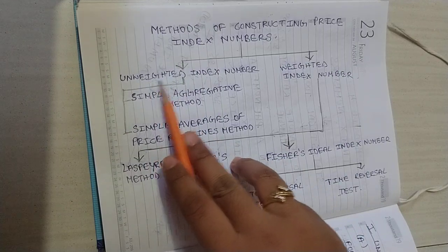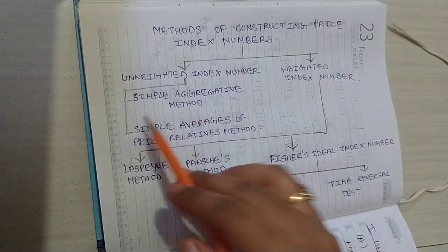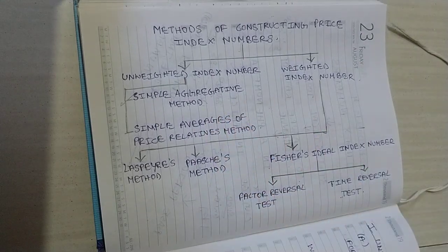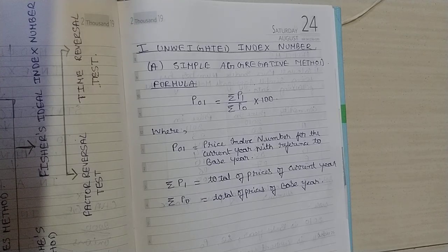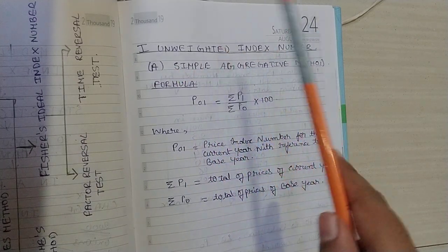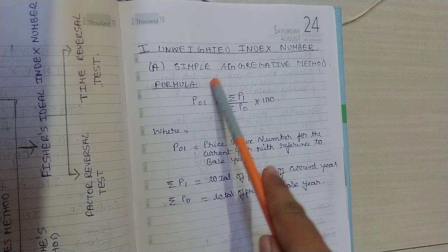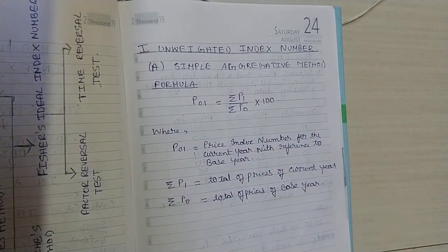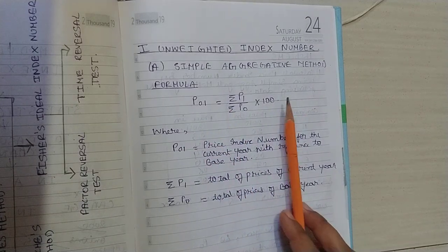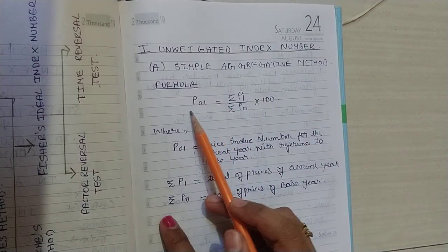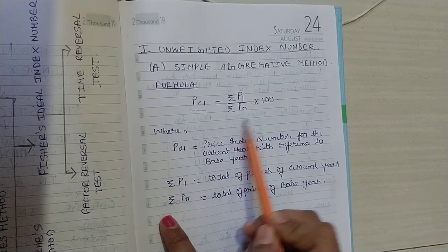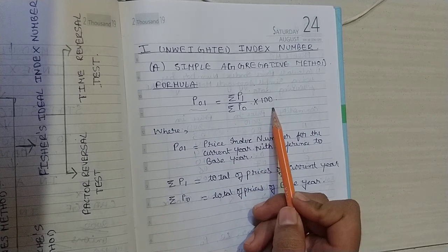Today we'll be solving problems on unweighted index numbers, specifically the first part — the simple aggregate method. The first method of constructing price index numbers under unweighted is the simple aggregative method. The formula to calculate the price index number under simple aggregative method is: P₀₁ = (ΣP₁ / ΣP₀) × 100.